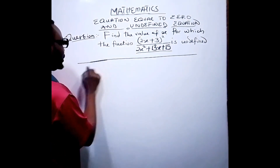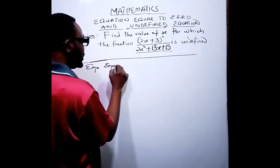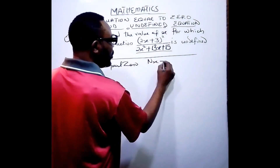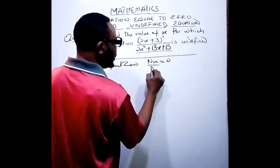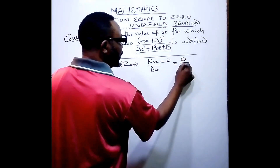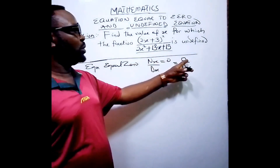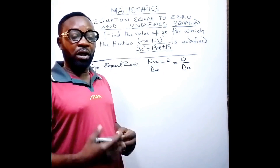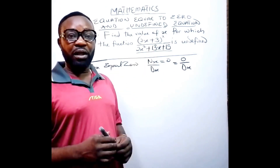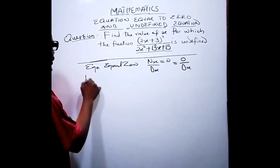For equation equal to zero, the numerator will be equal to zero. This is the numerator, this is the denominator. In that sense we are going to have zero over the denominator value. So it is the numerator value you are going to equate to be equal to zero, simplify it, then find the answer and provide it as an answer for the equation.